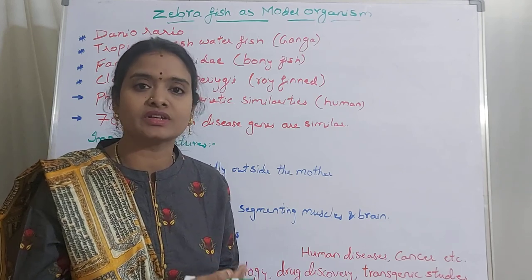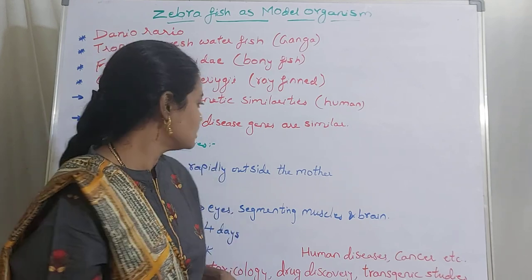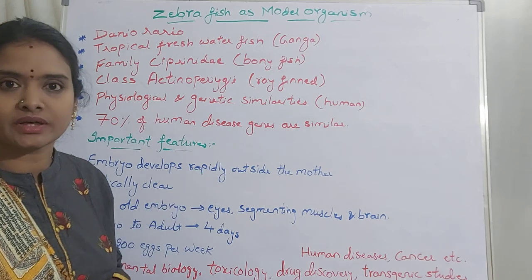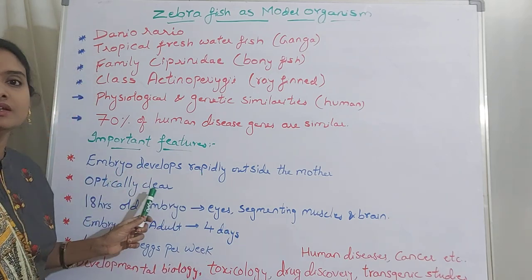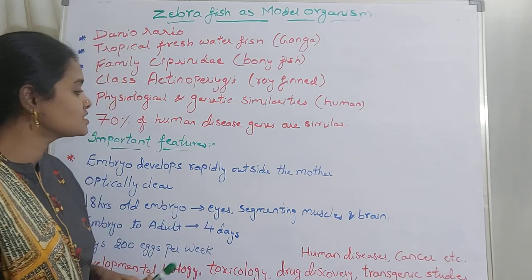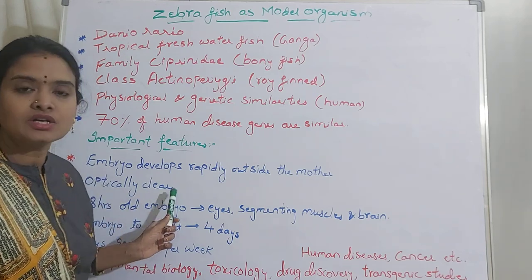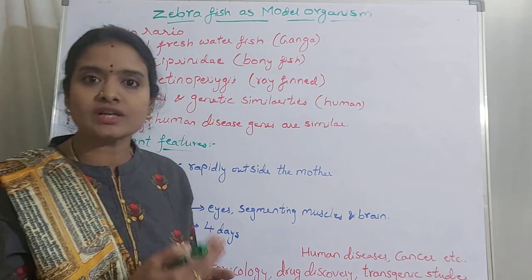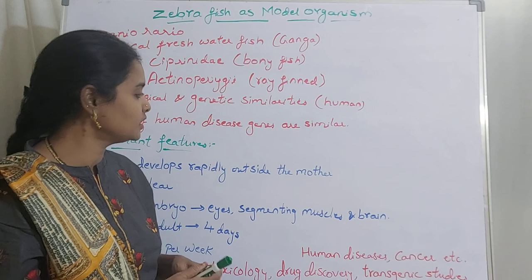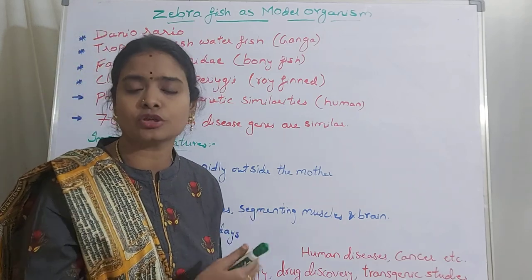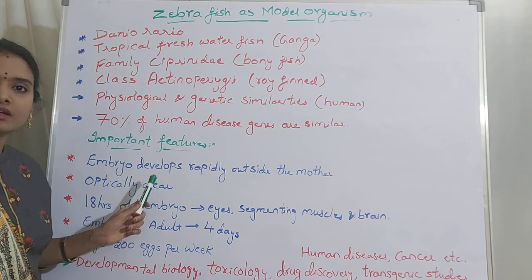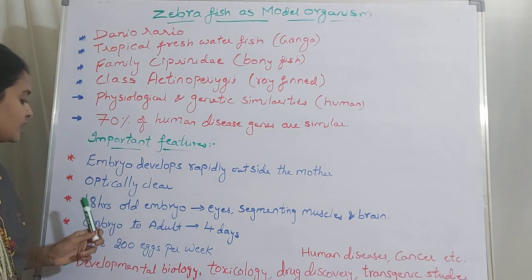With so many genetically similar embryos available, you can get accurate results when testing drugs. The embryo development occurs outside the mother, and another key benefit is that zebrafish embryos are optically clear. At the embryo stage or early developmental stage, zebrafish are transparent, so the developing embryo can be directly visualized — giving transparency to their development.